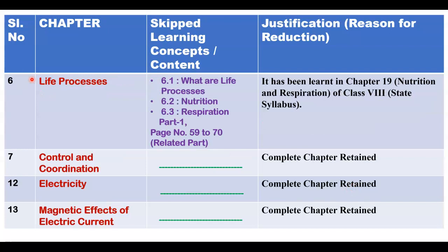Next, chapter number 6 — Life Processes. Section 6.1, 'What are life processes?', is completely skipped — you don't need to study it for your exam, though you may study it for general knowledge. Next, 6.2 Nutrition and 6.3 Respiration: from page number 59 to 70 and the related topics on page 70 have been skipped.